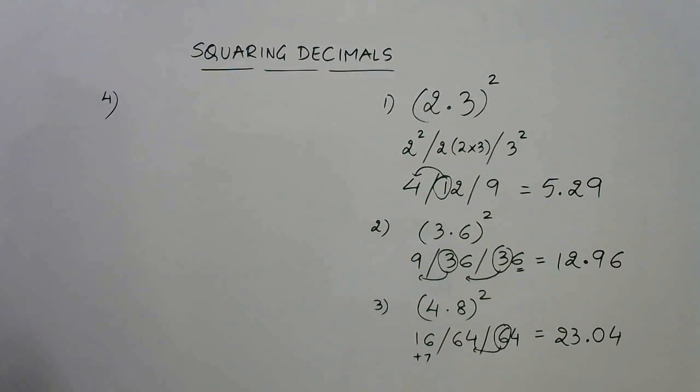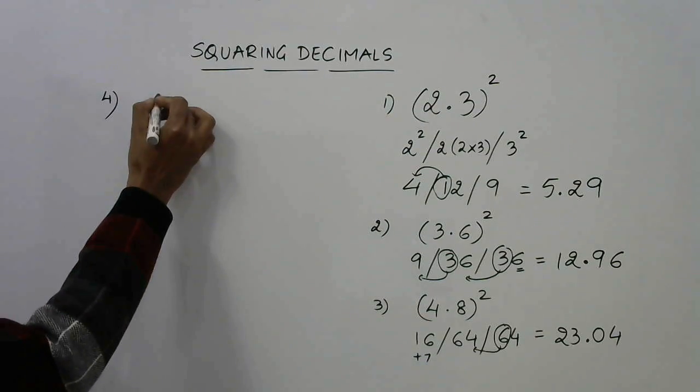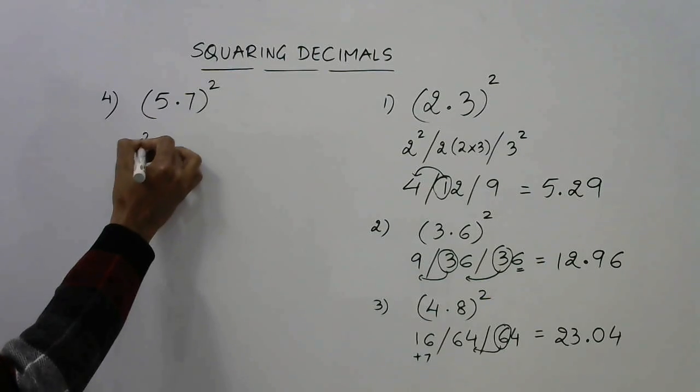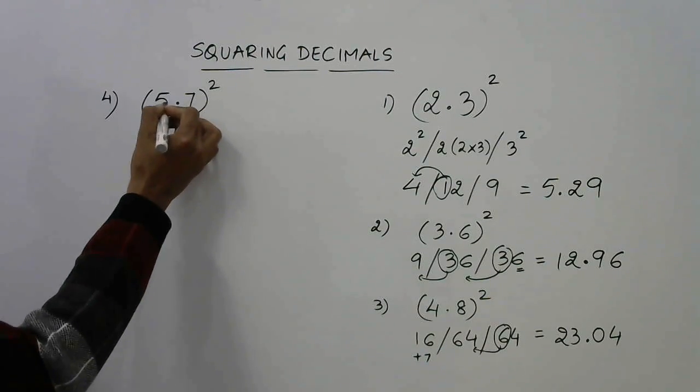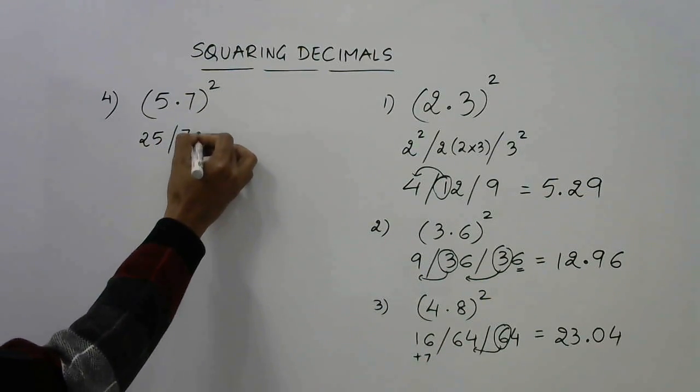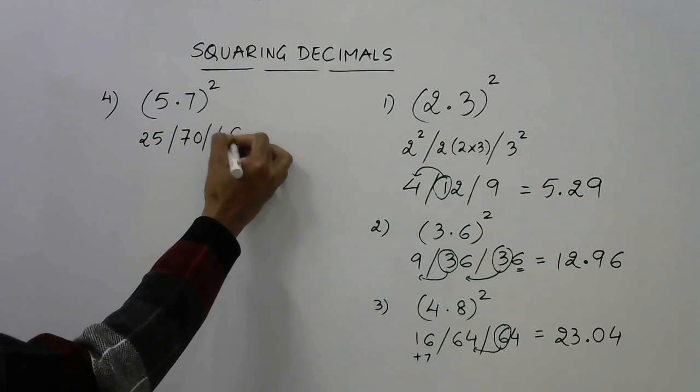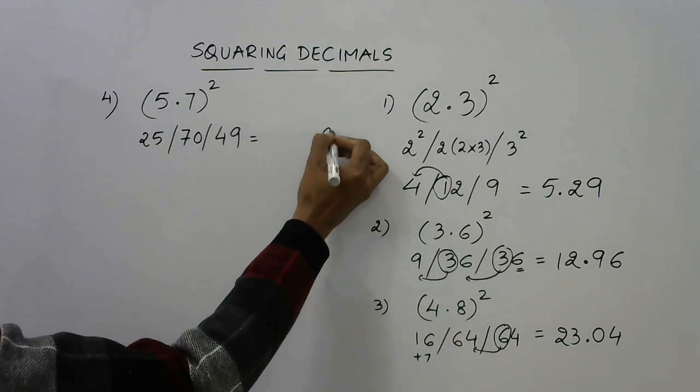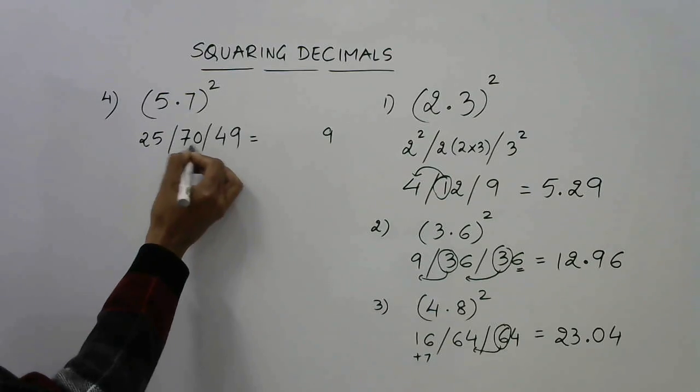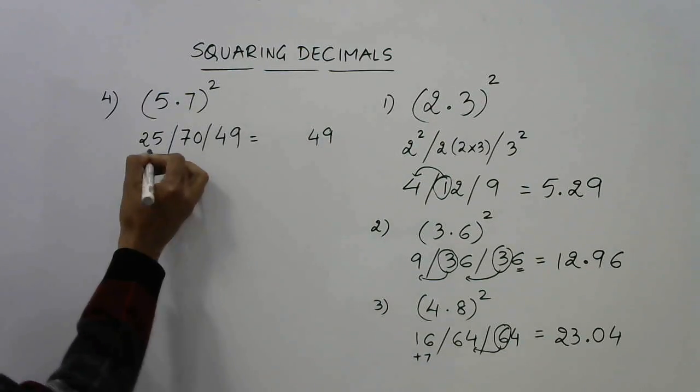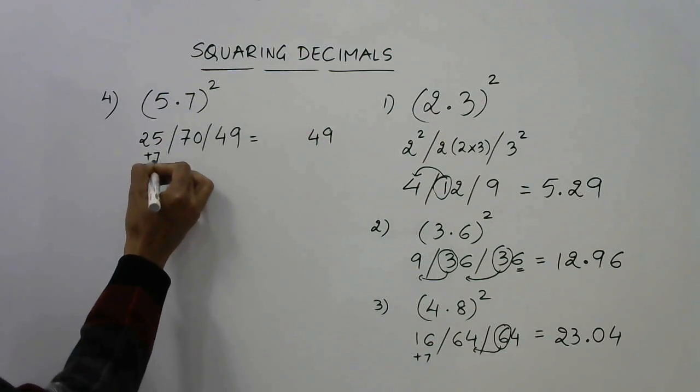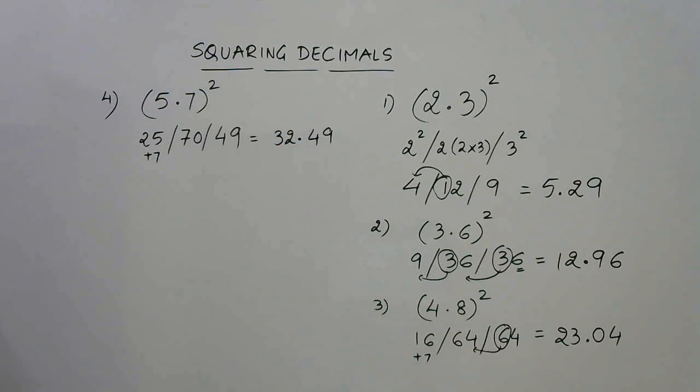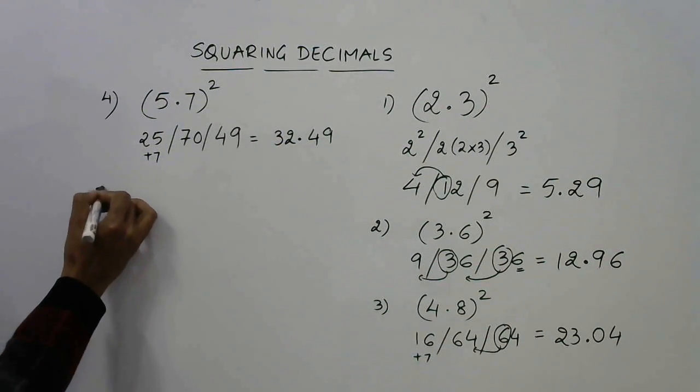This is example number 4. Let's have (5.7)². Now see, 5² is 25, 7 times 5 is 35, double is 70, and 7² is 49. So let's write the answer: 9, so 4 comes here, it becomes 74, so 4, 7 gets added here, 25 plus 7 is 32. So 32.49 is the square of 5.7.